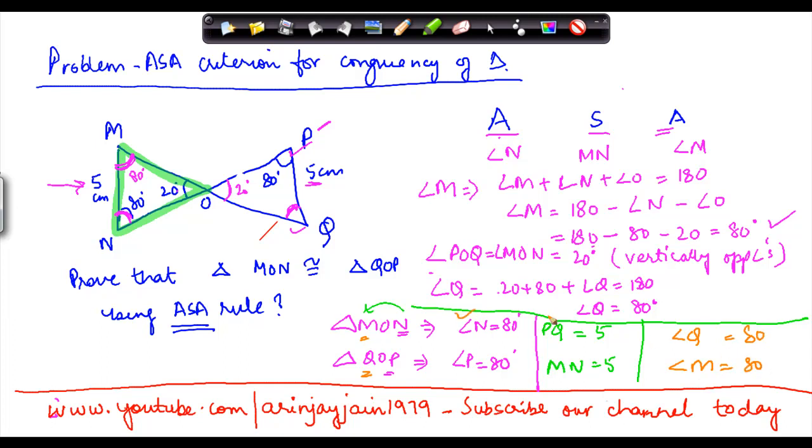So therefore the angle side angle criteria is satisfied and we say that triangle M O N is congruent to triangle Q O P.